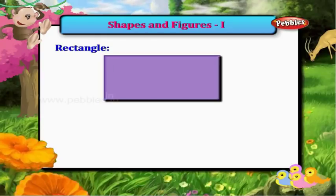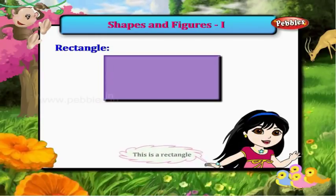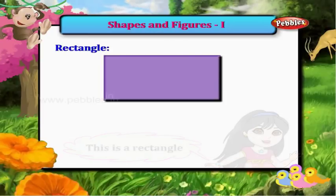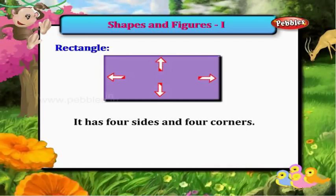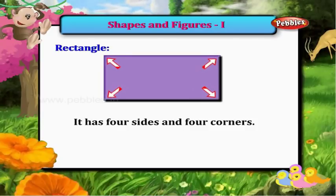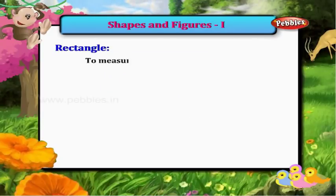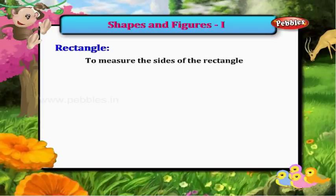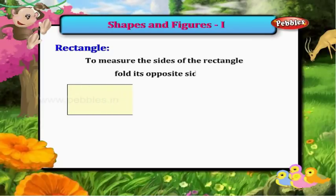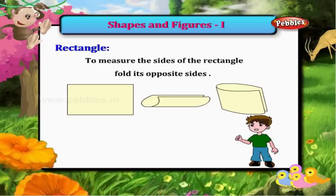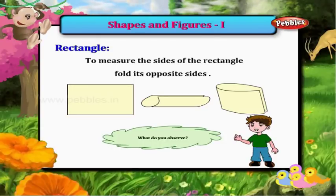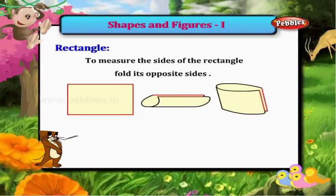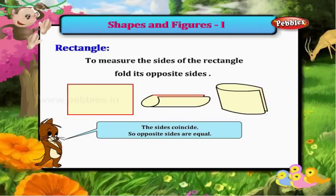Rectangle. This is a rectangle. It has four sides and four corners. To measure the sides of the rectangle, fold its opposite sides. What do you observe? The sides coincide. So, opposite sides are equal.